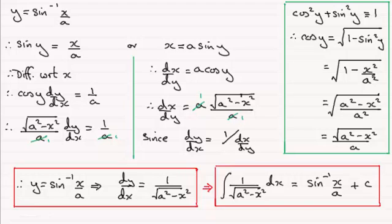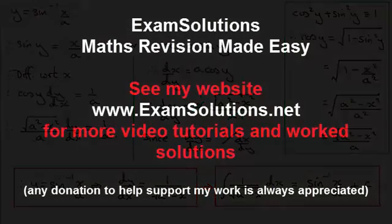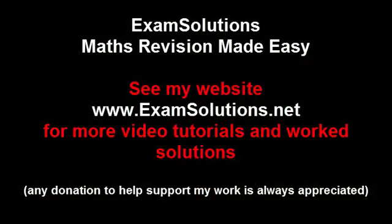I hope that's given you some idea of how we can differentiate y equals the inverse sine of x over a, or the arc sine of x over a, the result we get, and also the result we get when we integrate 1 over the square root of a squared minus x squared with respect to x. Thank you.